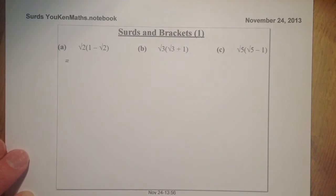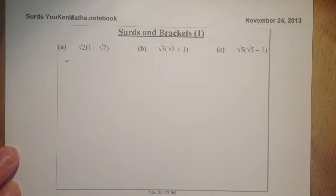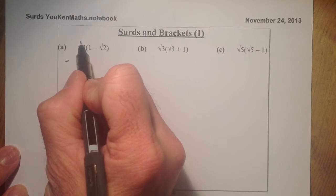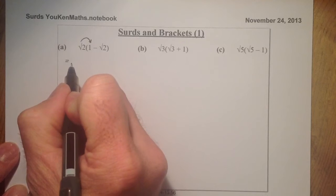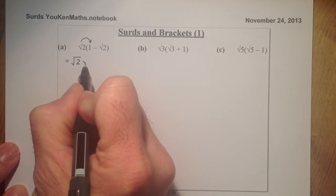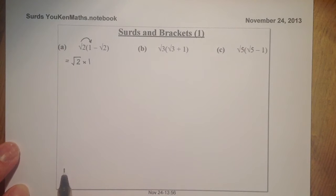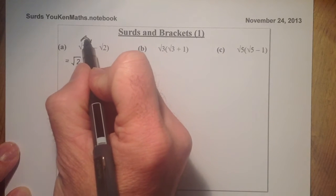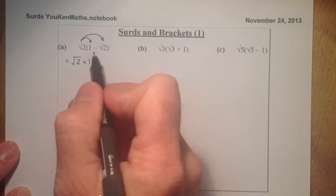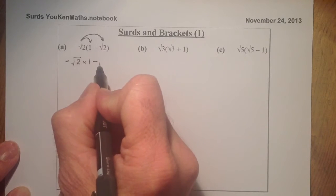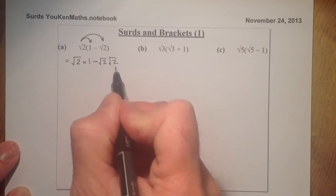I'll go forward and do the first one. What you can do is freeze the video and try the other two questions, then check your answer with what I've got. So remember when multiplying out the brackets, we multiply the term outside by the first term inside. I'm going to write this out in full, which I wouldn't normally do. So that's root 2 times 1. Then I'm going to multiply the second term in the bracket by the term outside, which gives me a minus sign and root 2 times root 2.